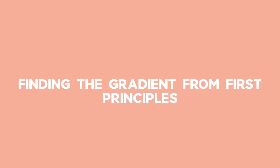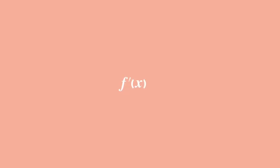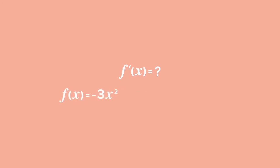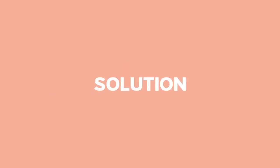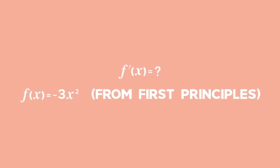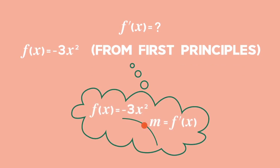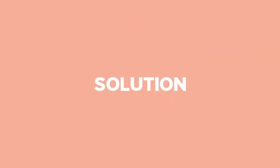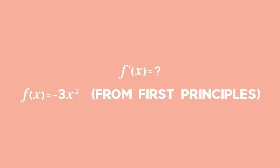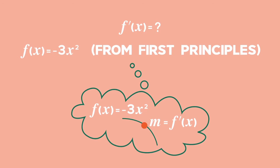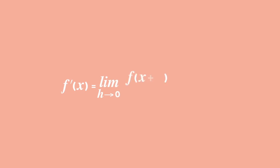Example 1: Finding the gradient from first principles. Find the expression for the gradient of the function f of x equals negative 3x squared from first principles. Using the formula for first principles, we will get the gradient of the function f. f prime of x equals the limit as h tends to 0 of f of x plus h minus f of x all over h.